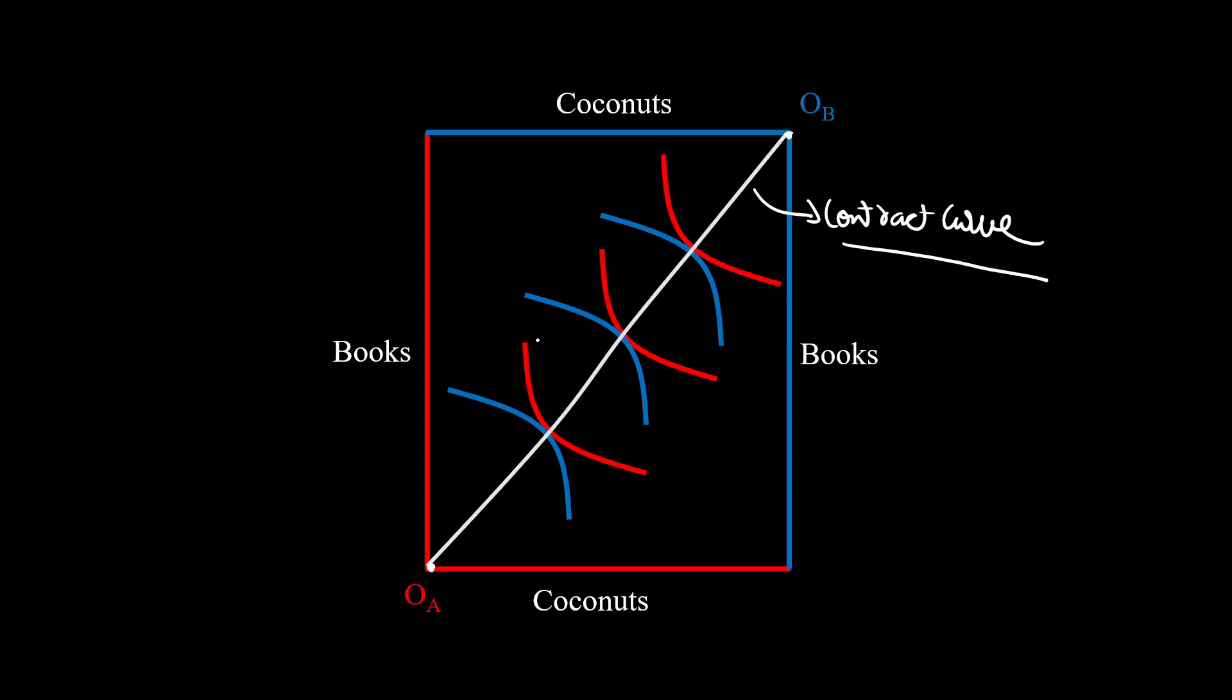One more thing. We all know that the Pareto efficient points are where the indifference curves are tangential to each other, right? And we do know that the slope of an indifference curve is given by its marginal rate of substitution. So for agent A, it's given by MRS of A. And for agent B, it's given by MRS of B. Now, if their slopes are equal, that means their marginal rate of substitutions are equal as well.